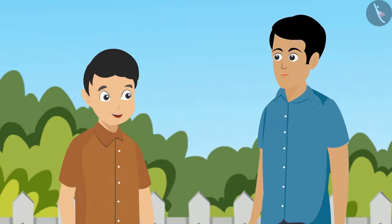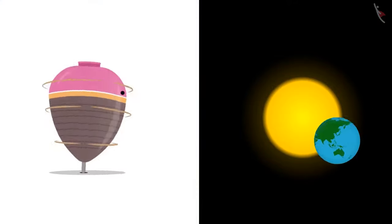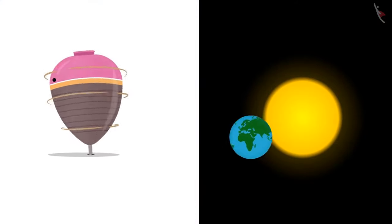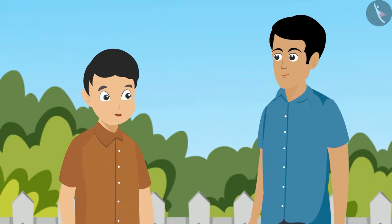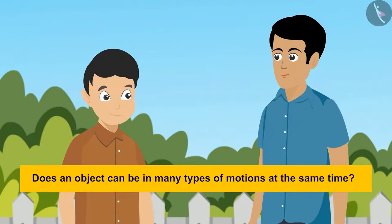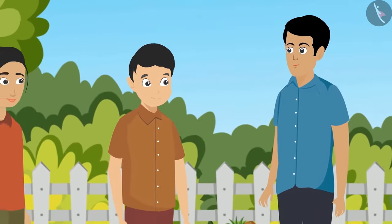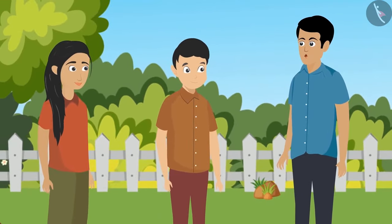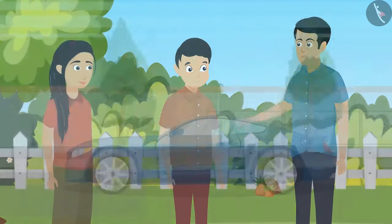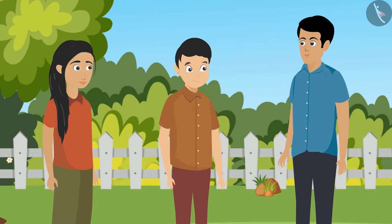Brother, I understood this, but I have another question. Earth revolves around the sun and rotates on its axis too. And the spinning top can also change its place while rotating. So does that mean that an object can be in many types of motions at the same time? Very well, Pavan — yes, you got it right. An object can be in more than one type of motion at the same time. For example, the tyre of a car rotates and moves forward as well. You kids can also rotate and move together.